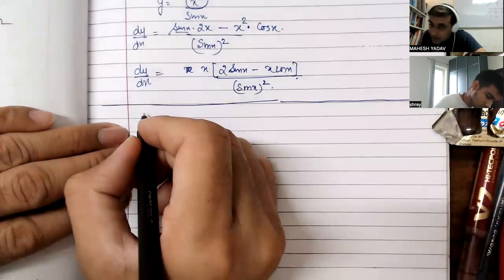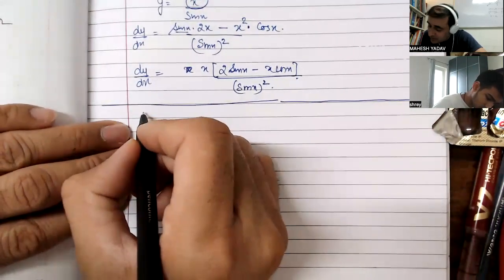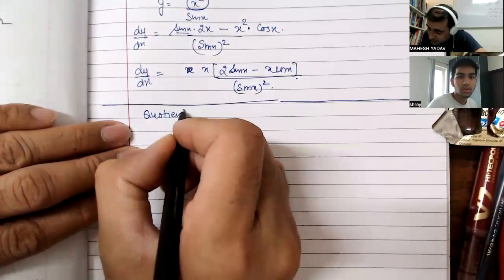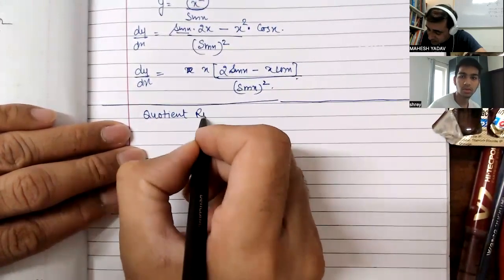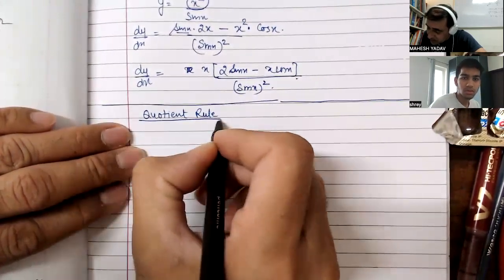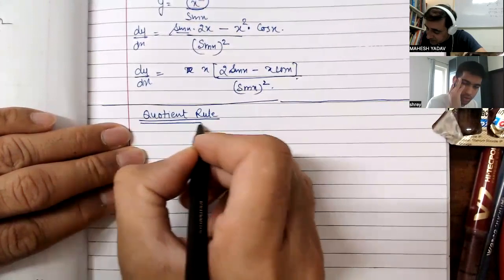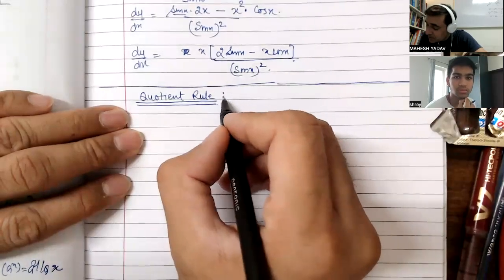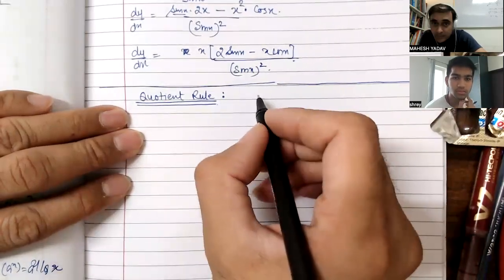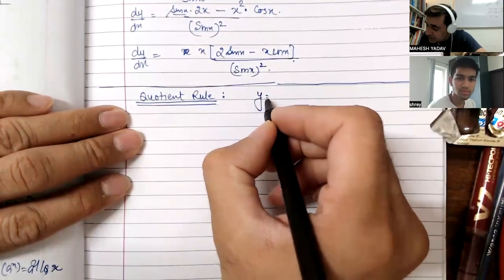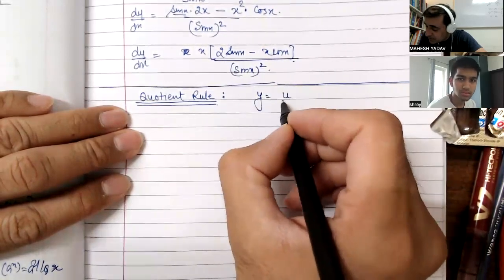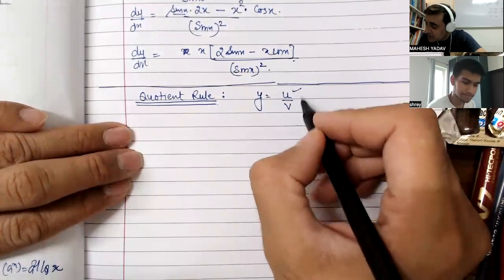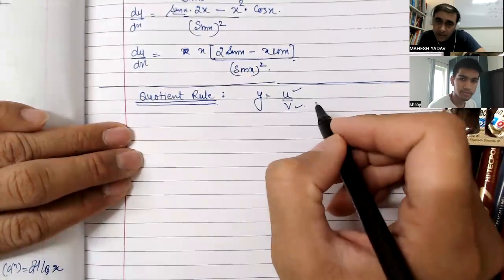We have started the Quotient Rule. When does the Quotient Rule apply? When two functions are divided — like y is equal to u upon v — one function is in the numerator and one is in the denominator.